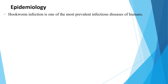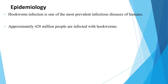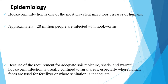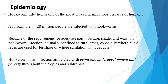Regarding epidemiology, hookworm infection is one of the most prevalent infectious diseases of humans. Approximately 428 million people are infected with hookworms. Because of the requirement for adequate soil moisture, shade, and warmth, hookworm infection is usually confined to rural areas, especially where human feces are used for fertilizer or where sanitation is inadequate.